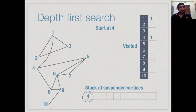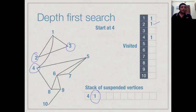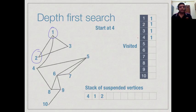We go to 1 and see that 1 has neighbors 2, 3 and 4. The first is 2, so we mark 2 as visited and put 1 on the stack, suspending 1. Now we look at the neighbors of 2, which are 1 and 3. 1 has already been visited but 3 has not, so we mark 3 as visited and suspend 2.